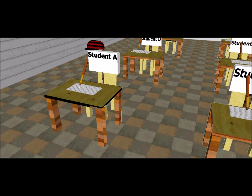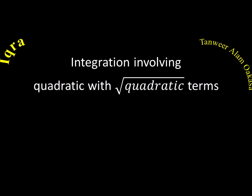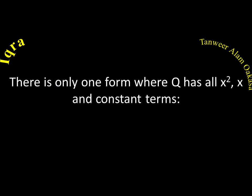There is only one form where the integration can be done where Q has all terms — x squared, x, and the constant terms. In other forms, integration is also possible but Q will not involve all those terms; it may involve only x squared and a constant.